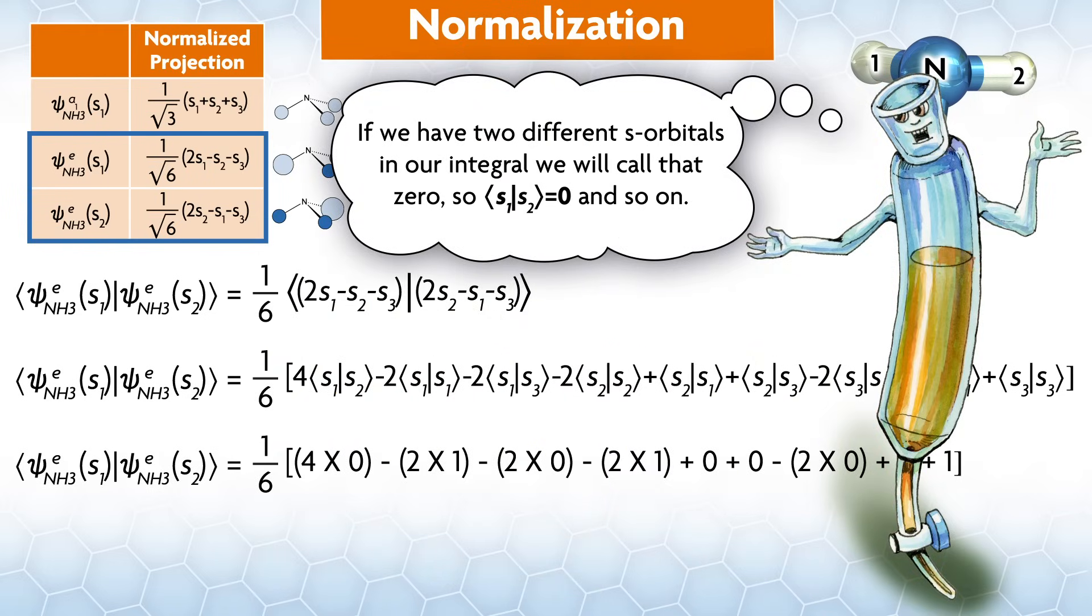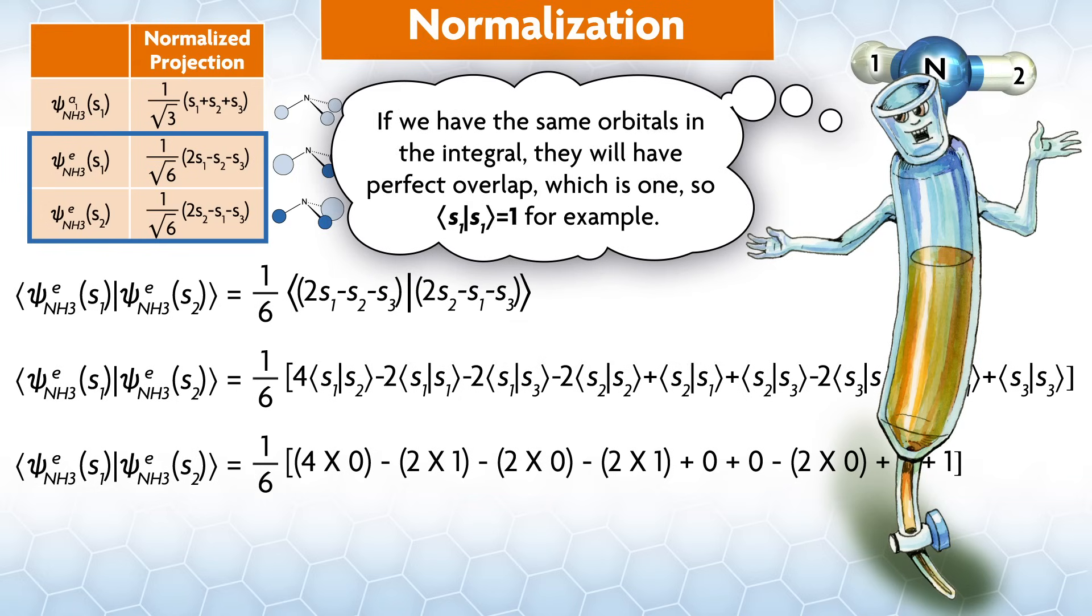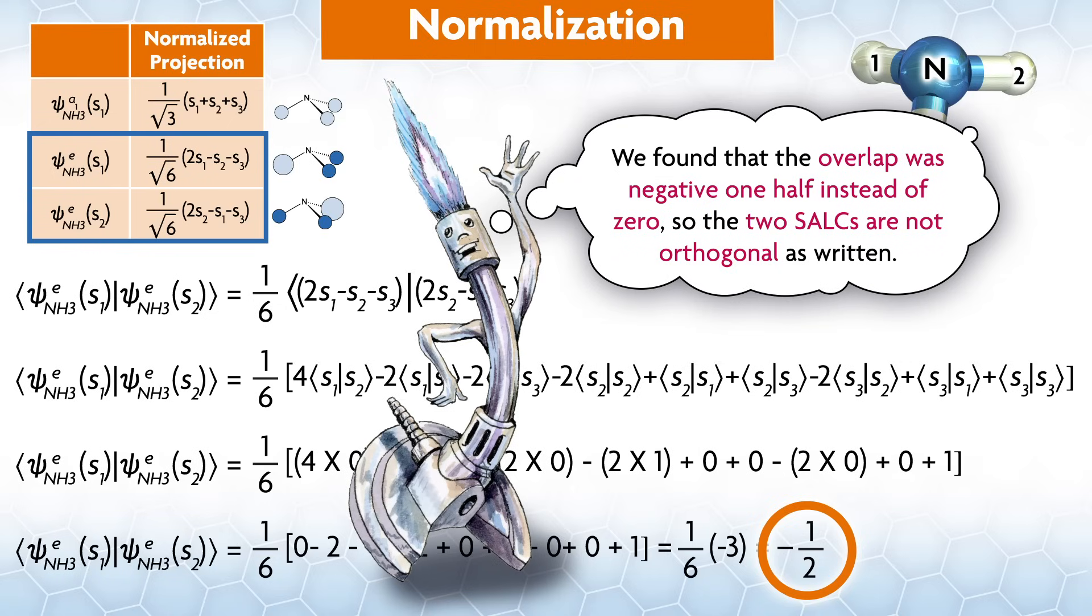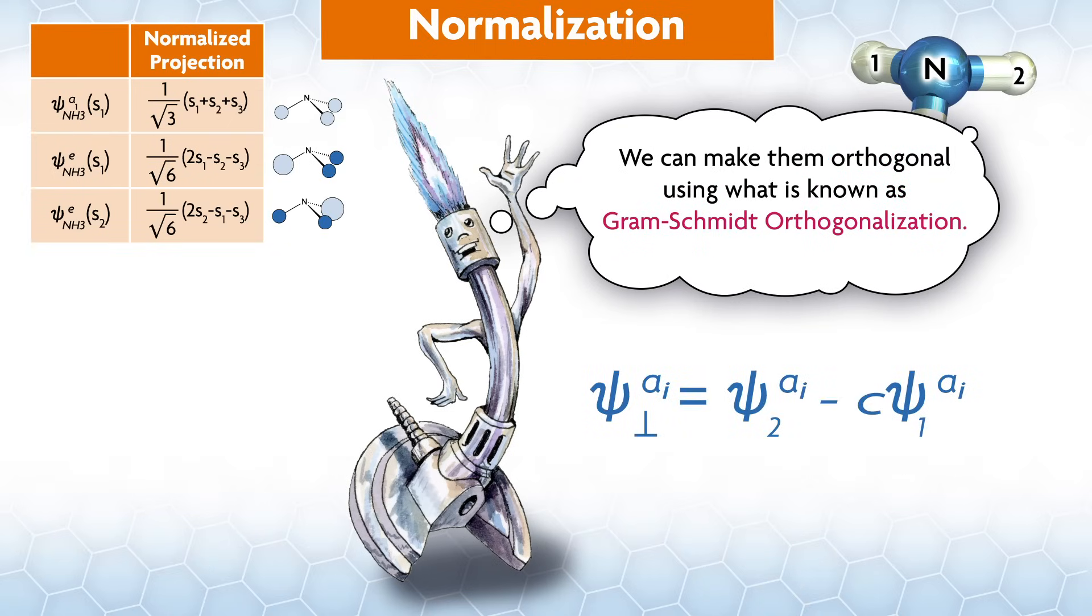Anyway, if we have two different s orbitals on our integral, we will call that zero. So, s1, s2 equals zero, and so on. If we have the same orbitals in the integral, they will have perfect overlap, which is one. So, s1, s1 equals one, for example. We found that the overlap was negative one-half instead of zero. So, the two SALCs are not orthogonal as written. We can make them orthogonal using what is known as Gram-Schmidt orthogonalization.